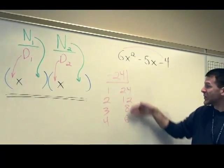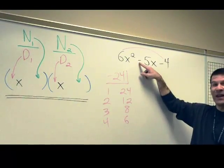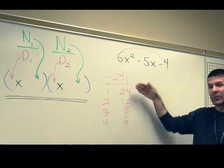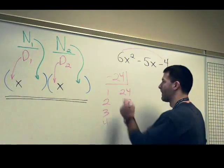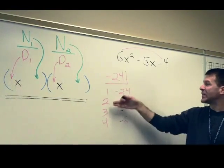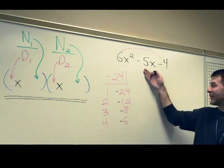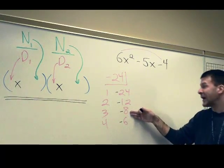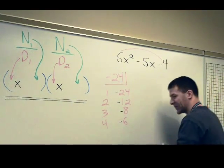So if this had been a plus, these would be positives. Since this is a negative, or a minus, these will be negatives. And then we just look and see which of these factor pairs adds up to a negative 5. It is right here, the 3 and the negative 8. I'll put those down.